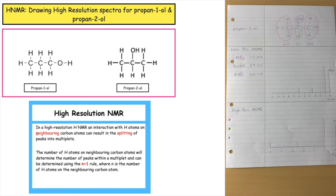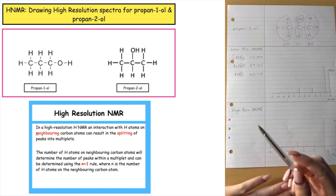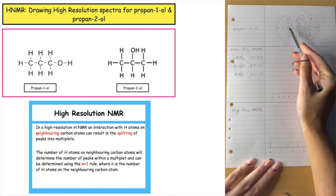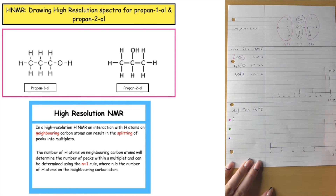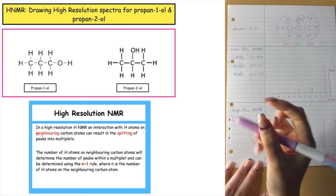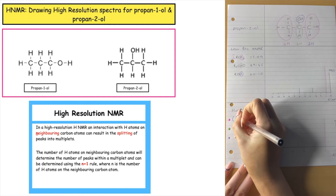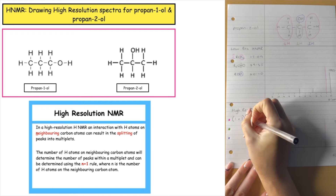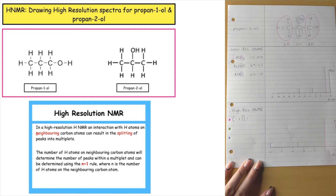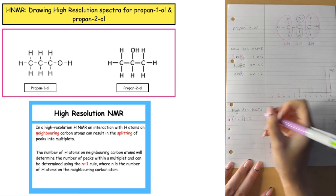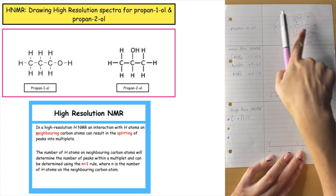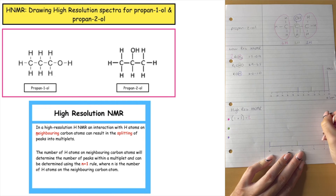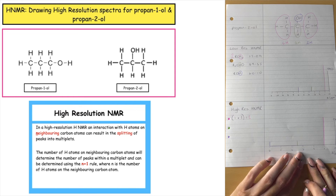Now we're going to do the exact same for propan-2-ol. Looking at the pink house — this carbon only has one next-door neighbour which is the greenhouse, and there is one hydrogen that lives inside there. Applying the plus one rule: one plus one equals two. So the pink environment, which has a height of six because we've got two environments which are the same, splits into two — it's a doublet.